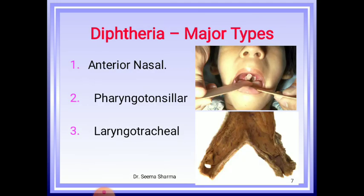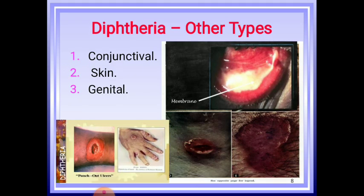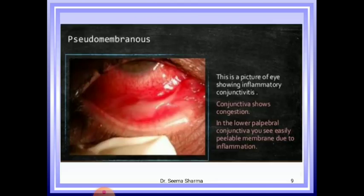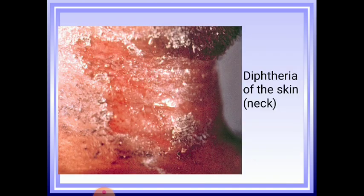What are the different major types? According to the site involved: anterior nasal, pharyngeotonsillar, and laryngotracheal. Other types are conjunctival, skin, and genital diphtheria. This picture shows an eye with inflammatory conjunctivitis — the conjunctiva shows congestion in the lower palpebral conjunctiva, and an easily peelable membrane is seen due to inflammation. Another picture shows diphtheria of the skin of the neck.